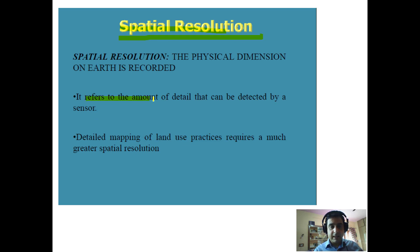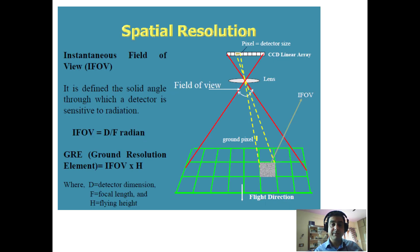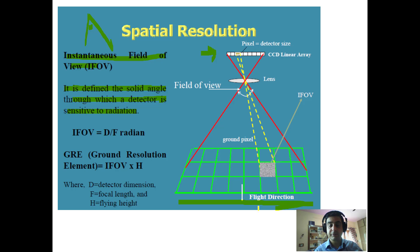The next type is spatial resolution, which refers to the amount of detail that can be detected by a sensor — similar to the resolution of a mobile phone. Resolution depends on the instantaneous field of view (IFOV), defined as the solid angle through which a detector is sensitive to radiation. The detector is placed on the sensor, and radiation passes through the lens to the surface below.